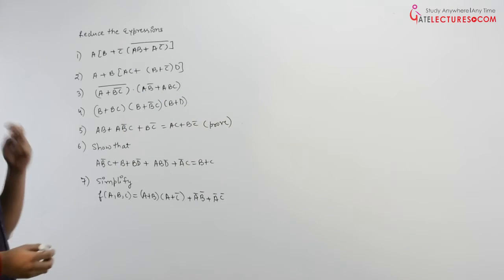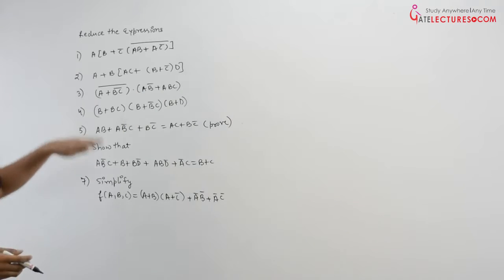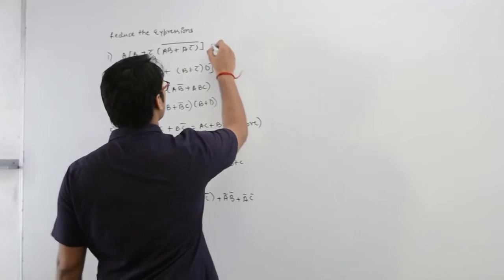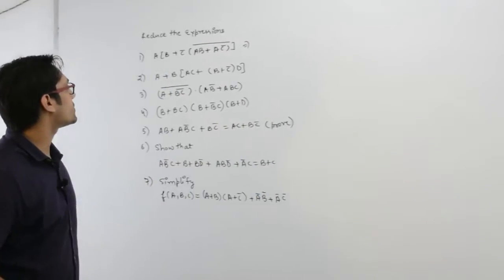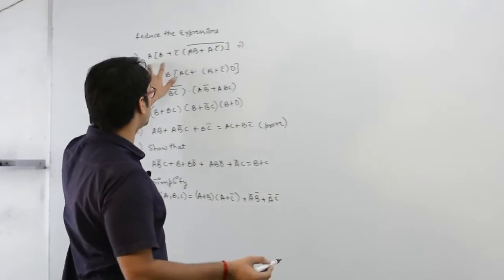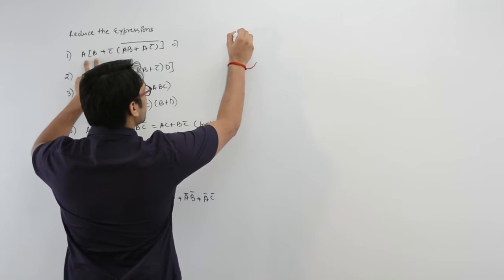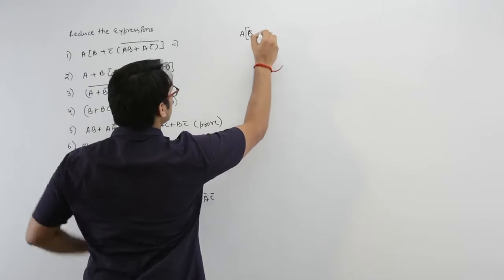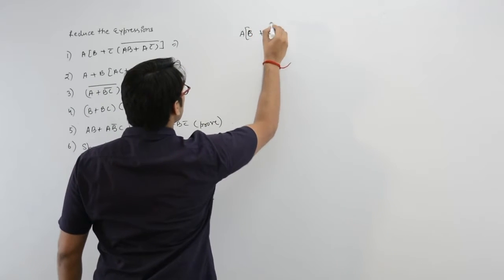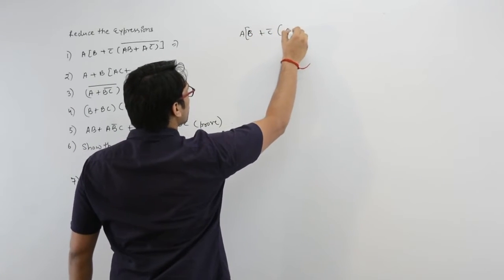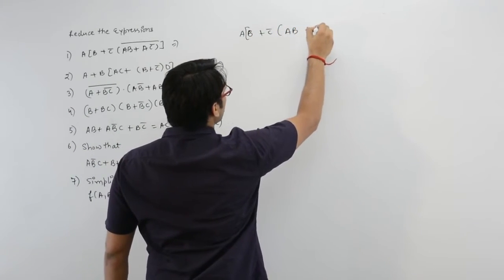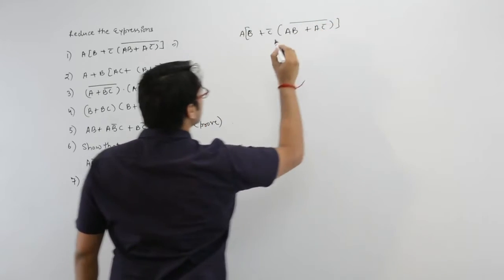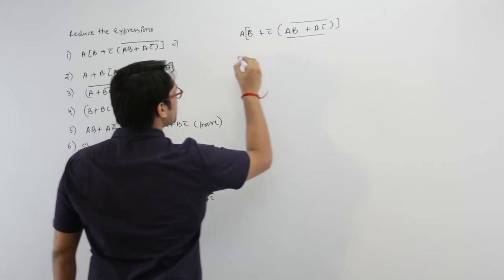Let us take the first expression here. Try to note the question before solving it. It says: reduce this expression. We can write this expression as A(B + C)' — that is, AB plus AC complement, whole complement.